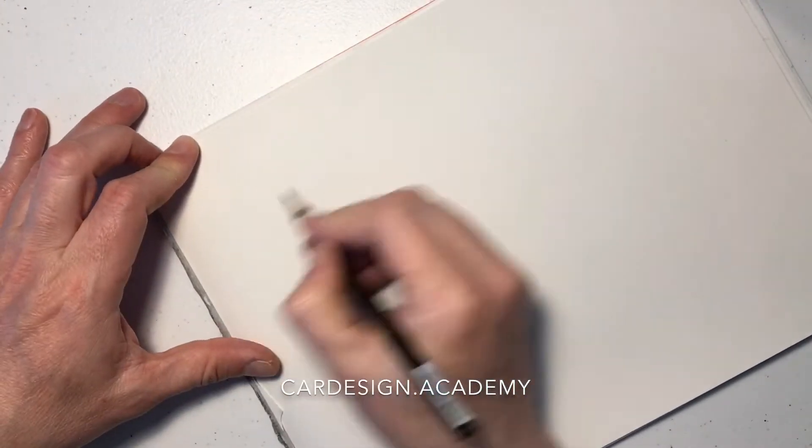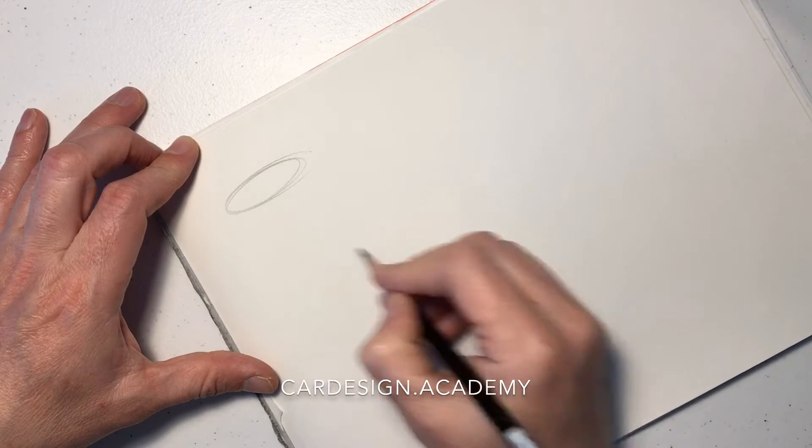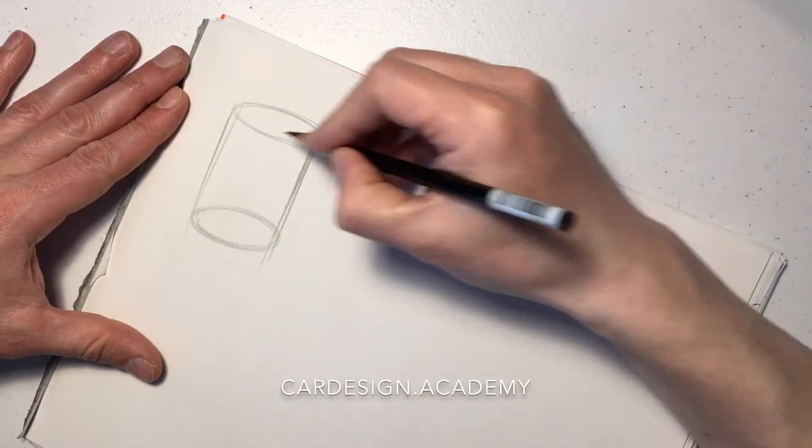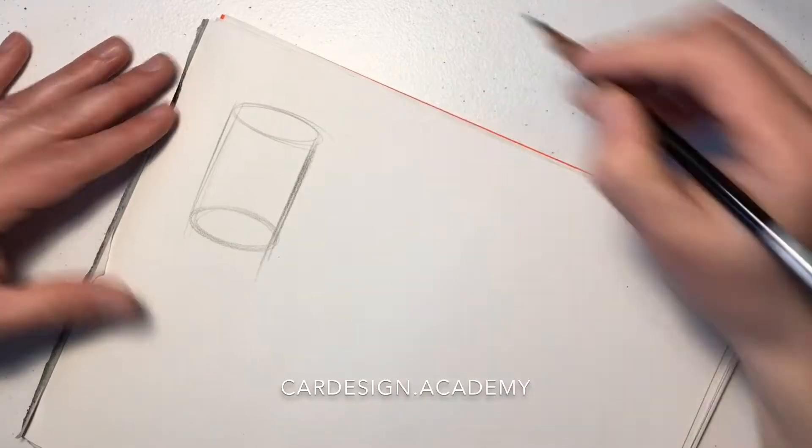Next to drawing ellipses, drawing cylinders is one of the most important skills car designers need to have. A cylinder is essentially two ellipses connected together.